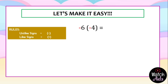Before we proceed, let me tell you about the parts of a multiplication equation. The first number you will find is the multiplicand — in this case, it's negative 6. The second number you will find is the multiplier — in this case, it's negative 4. Both negative 6 and negative 4 are called factors, and the answer in multiplication is called the product.